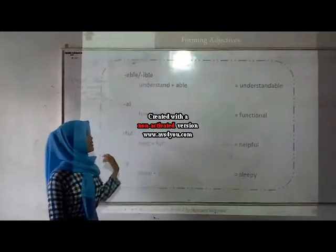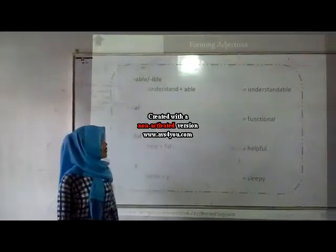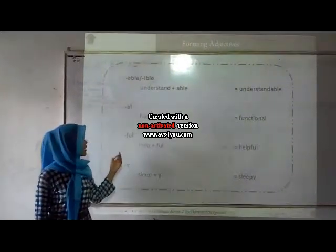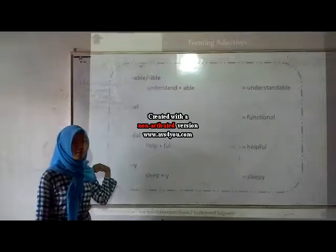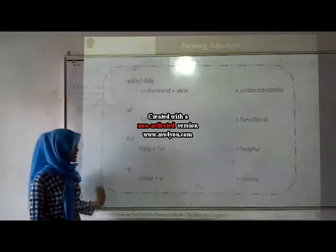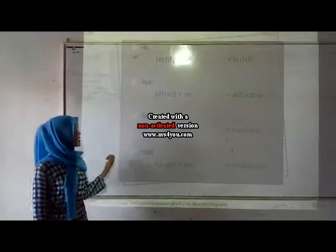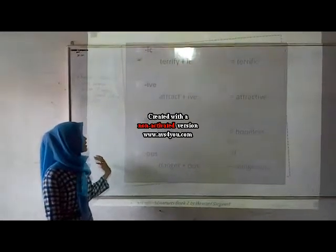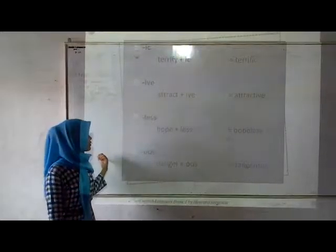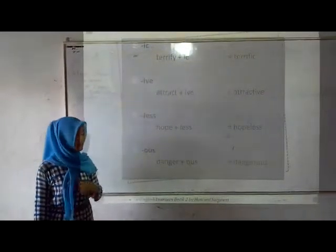Now we go to how adjectives are formed using suffixes. For example, understand — adding the suffix -able becomes understandable. Function — adding the suffix -al becomes functional. Adding the suffix -ful becomes helpful. Sleep — adding the suffix -y becomes sleepy. Terrify — adding the suffix -ic becomes terrific. Attract — adding the suffix -ive becomes attractive. Danger — adding the suffix -ous becomes dangerous.